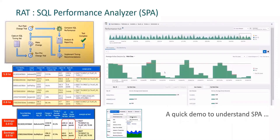The next slide covers a very important and cool utility called the SQL Performance Analyzer, or SPA. The SPA is part of Oracle Real Application Testing pack, and you can use it to validate changes made to the database system. SPA provides a fine-grained assessment of your environment changes.